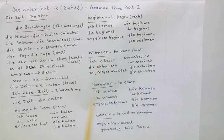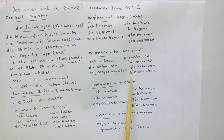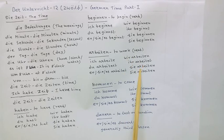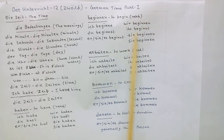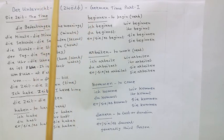Now it is very important to note: in case of wir, and sie (they), and Sie (formal you), the verb will be in the infinitive form — that is the original verb form. For example: wir beginnen, sie beginnen, Sie beginnen. These are called regular verbs.